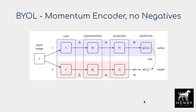Another approach, developed by researchers at DeepMind, is Bootstrap Your Own Latent (BYOL). Surprisingly, BYOL doesn't use any negative samples at all — only a rotated dog and a horizontally flipped dog passed through two different networks. Similar to MoCo, one network is a lagging or momentum update of the other — not a true Siamese network with shared weights. In the BYOL framework, the online network predicts the output of the target network, with a stop gradient preventing any gradient from flowing back through the momentum encoder. It's surprising this avoids representation collapse without any negatives.